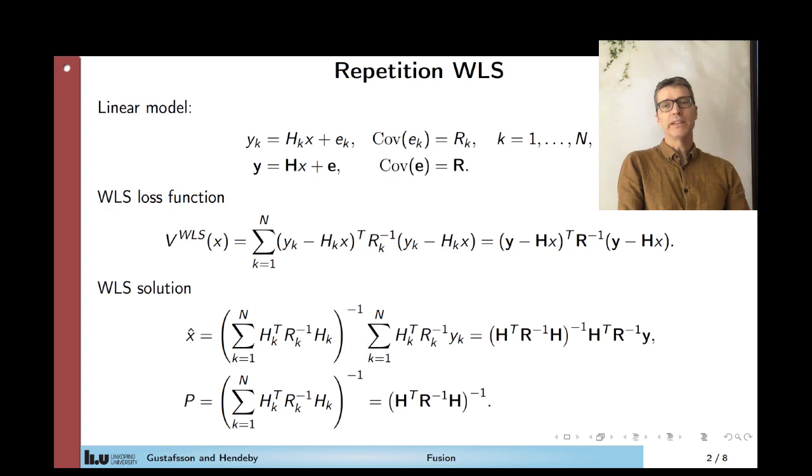So let's repeat the weighted least squares method. We have the linear model where the observations are provided in sequential or batch form. We have the weighted least squares loss function, and minimizing that one leads to the weighted least squares solution.